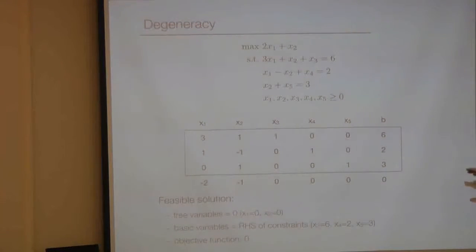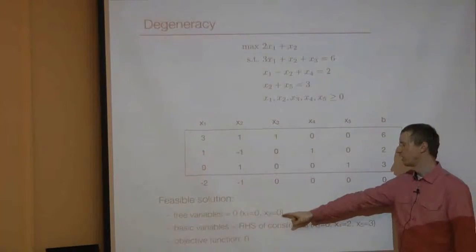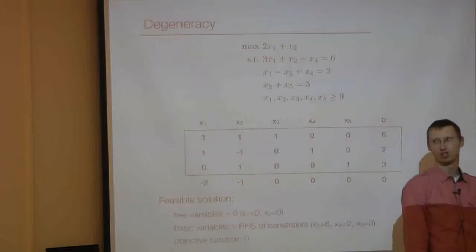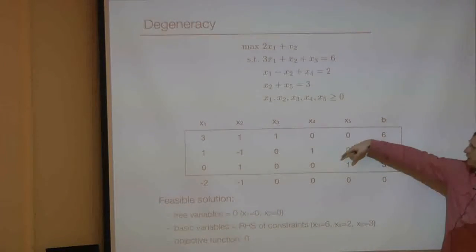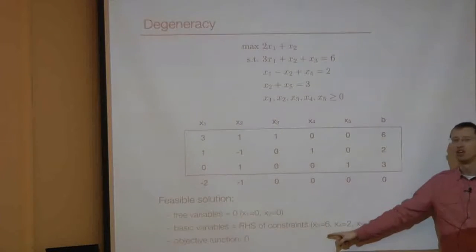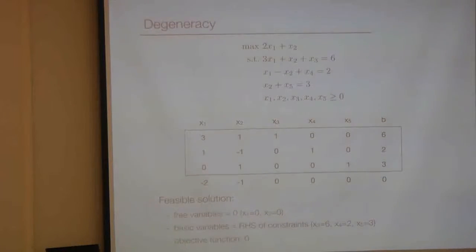Each iteration of the simplex algorithm leads to one vertex of the feasible set. The vertex we start from is where the free variables equal zero — initially those are our original optimization variables x1 and x2. So the initial solution is (0, 0). The basic variables are set to the right-hand sides of the corresponding constraints, which are positive if the problem is well-posed. The value of the objective function is zero, because x1 and x2 are zero.